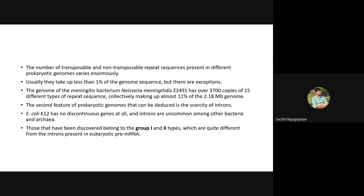When mRNA is formed in eukaryotes, it's called pre-mRNA because it has exons spaced by introns. Those introns have to be spliced off and the exons linked together to form the processed mRNA. Whatever introns you see in eukaryotes are very different from what you might see in prokaryotes, where introns are normally very uncommon.